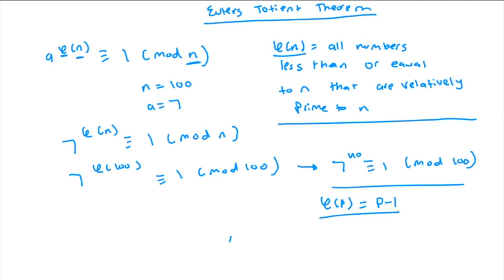So, you have phi of p is equal to p minus 1. Which again gives you a to the power of p minus 1 is congruent to 1 mod p. If, in this case, n is some prime p. Which brings us back to Fermat's Totient theorem.